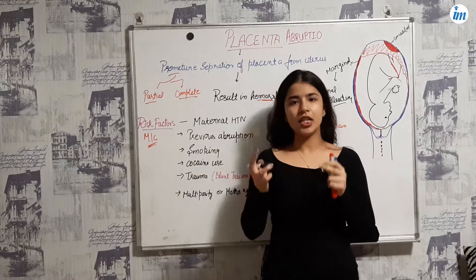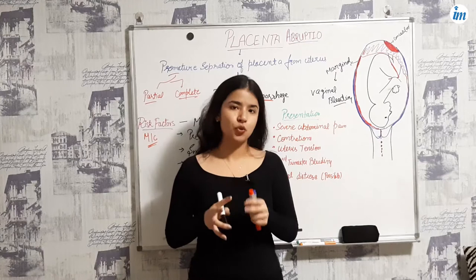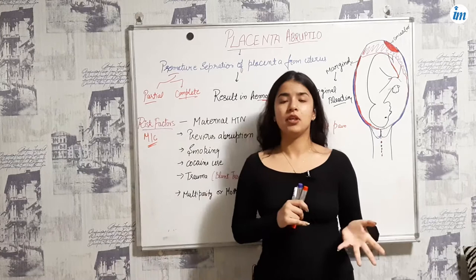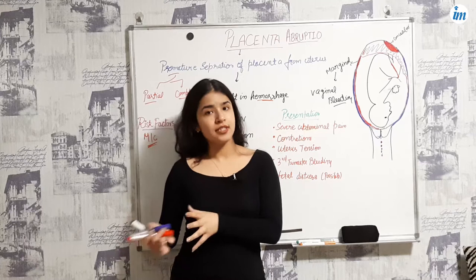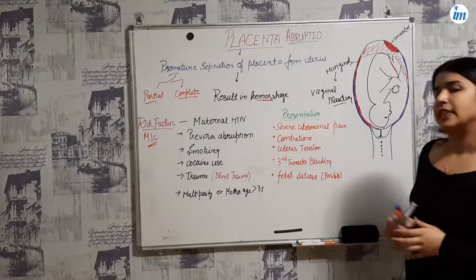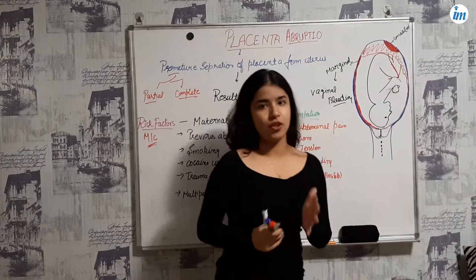You can see vaginal bleeding in the marginal type. The concealed type is more central and the blood is within the uterus — you will not see any external hemorrhage. It is one of the most dangerous types. The complications of the concealed type include DIC, fetal hypoxia, Sheehan syndrome, uterine tetany, and hypovolemic shock for the mother. These are the most important complications for the concealed type, and for marginal type they are not as dangerous.